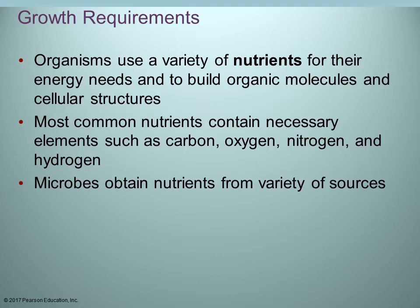Organisms are going to use a variety of nutrients to help them survive. They're going to need certain nutrients to break down, to get energy from them, to carry out their metabolic processes so they can build various molecules necessary for cellular structures. The most common elements that are necessary are carbon, oxygen, nitrogen, and hydrogen.